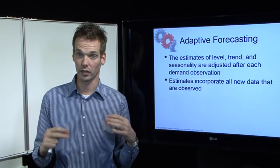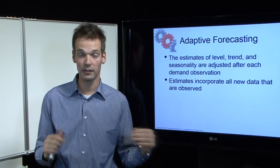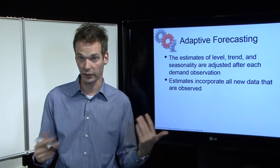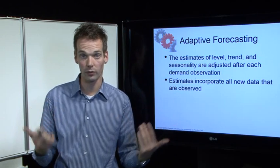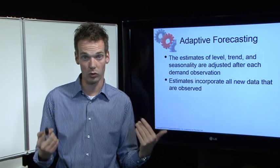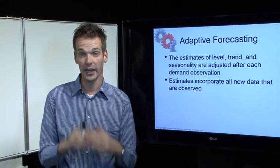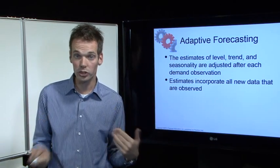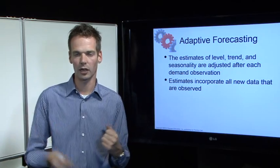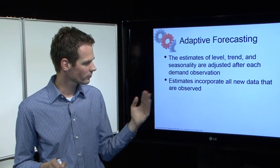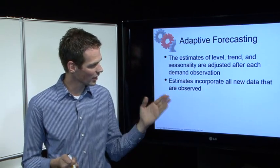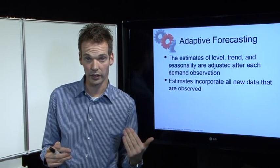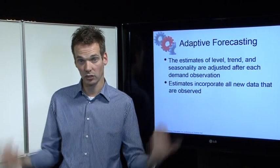The level and the trend are always the same. It was something with 18,000 and the trend was 524 and that will never change. But now in adaptive forecasting it could change, and we will see how that works in the coming videos. The estimates therefore will incorporate all the new data as it comes available.